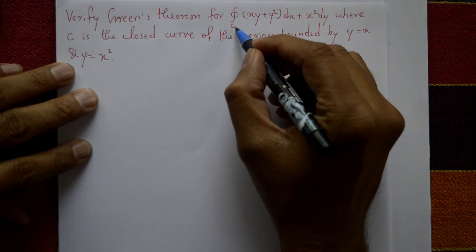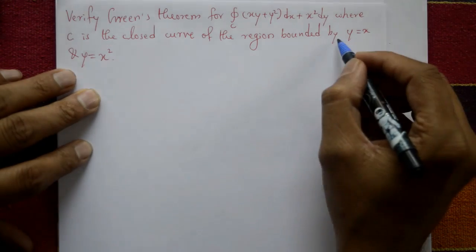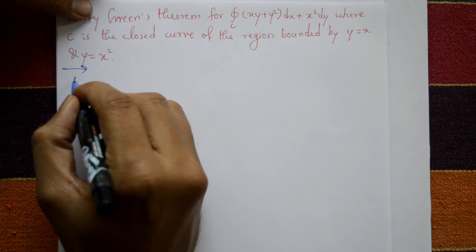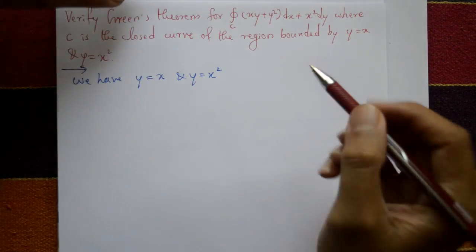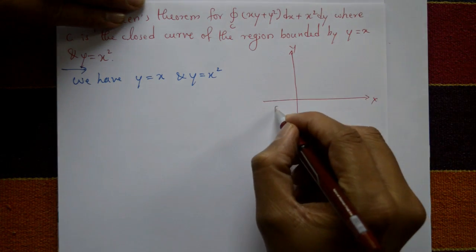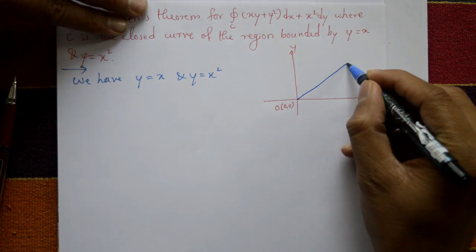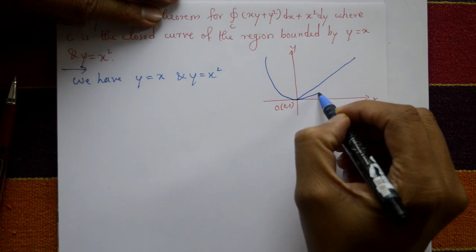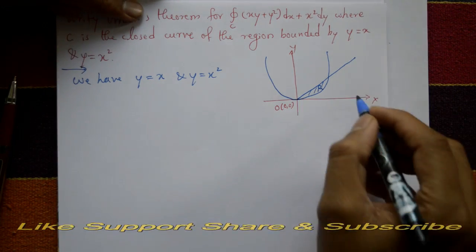We apply Green's theorem to integrate along closed curve C: ∫(xy + y²)dx + x²dy, where C is the closed curve of the region bounded by y = x and y = x². The diagram shows the x-axis, y-axis, and origin O(0,0). y = x is a 45-degree straight line and y = x² is a parabola symmetric about the y-axis. We need to find region R.